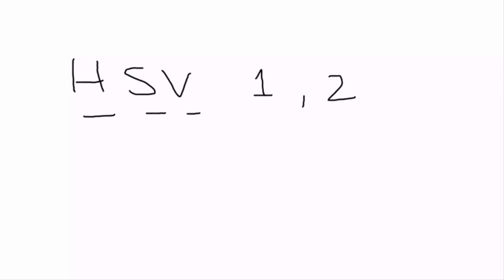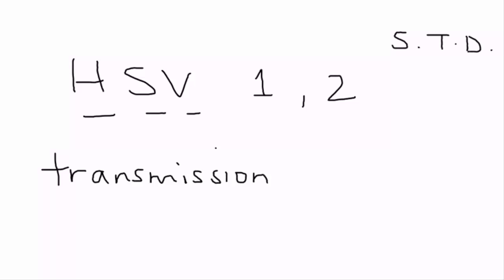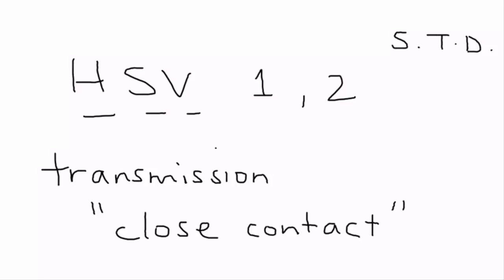Herpes is caused by herpes simplex virus, and there are two types: herpes simplex virus 1 and herpes simplex virus 2. Transmission is technically a sexually transmitted disease, but because children and babies can also get it — including during delivery — the mode of transmission is really called close contact with an infected person when the virus is actively shedding. It can definitely also be transmitted during sexual contact.